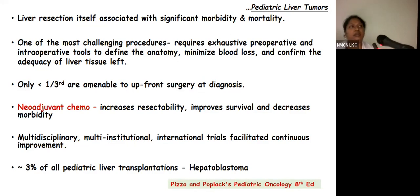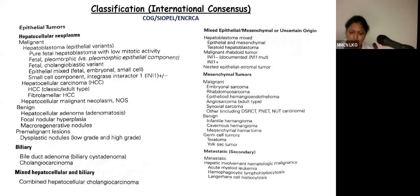As liver resection is one of the most challenging procedures, it requires proper pre-operative planning to define the anatomy, minimize blood loss, and confirm the adequacy of remnant liver. At the time of diagnosis, only one-third of tumors are amenable for upfront surgery. Therefore, neoadjuvant chemotherapy is used, which increases resectability, improves survival, and decreases morbidity in the post-operative period. As pediatric liver tumor is rare, the Children's Hepatic Tumor International Collaboration (CHIC) made an attempt to standardize diagnostic criteria and nomenclature on an international scale.